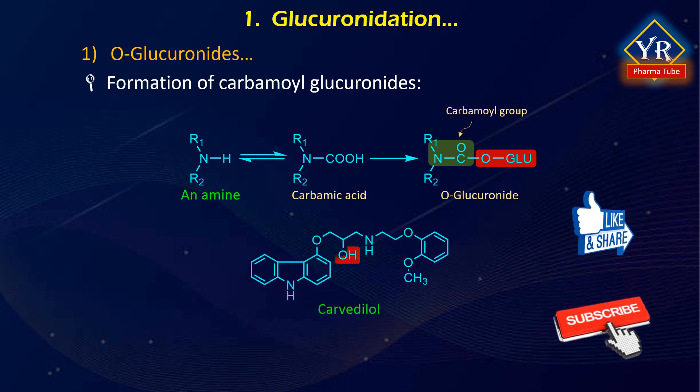A number of primary and secondary amines have been found to yield carbamoyl glucuronides, while the intermediate carbamic acids are not stable enough to be characterized. Carvedilol is one drug exemplifying the reaction, in addition to forming an O-glucuronide on its alcohol group and a carbazole-N-linked glucuronide. Much remains to be understood concerning the chemical and biochemical reactivity of the carbamoyl glucuronides.